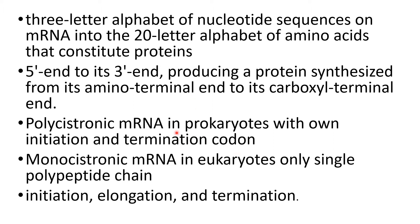In prokaryotes, mRNA is almost always polycistronic, as operons are present in prokaryotes and these operons give more than one coding region in the messenger RNA. In eukaryotes, the mRNA contains a single coding region and is monocistronic. In prokaryotes, mRNA undergoes translation as it is formed, while in eukaryotes the mRNA first undergoes post-transcriptional modifications and must be mature and functional before undergoing translation.